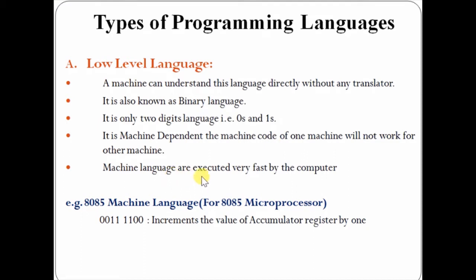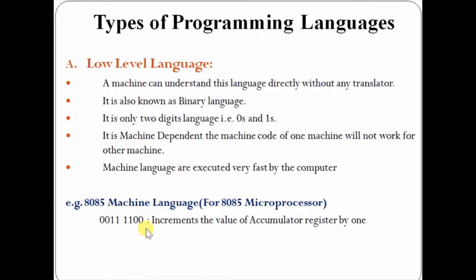Machine language is executed very fast by the computer. For example, consider 8085 machine language. If I write a program in this language, 00111100 is an instruction. This instruction means increment the value of the accumulator register by 1. So here you can see we are giving instructions to the computer just by writing in the form of 0 and 1 only.